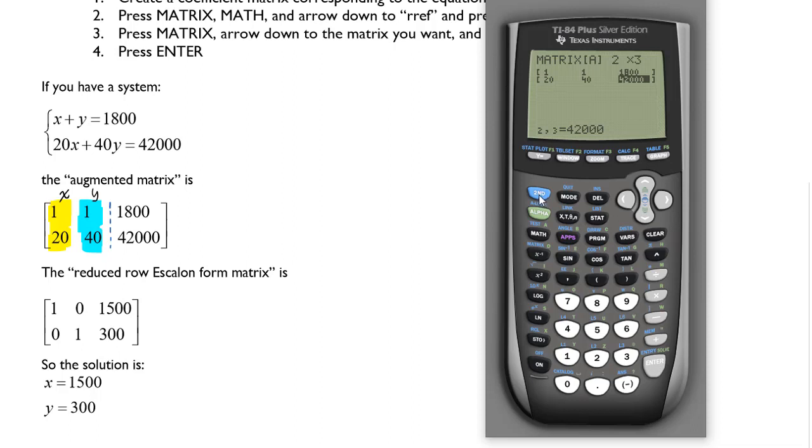And now we've entered all our data in the matrix. We'll go to second MATRIX, arrow to MATH, and then arrow until I find row reduced echelon form or RREF.